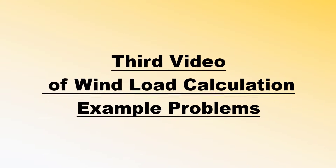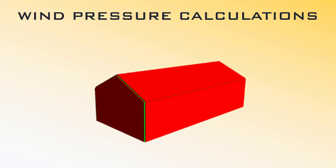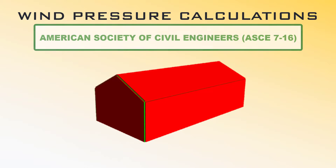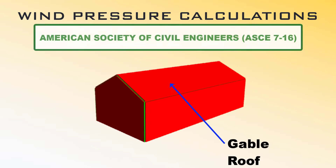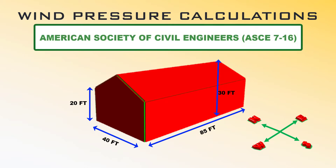Bismillahirrahmanirrahim. Dear friends, this is the third video in the continuation of wind load calculation example problems. In this video we will calculate wind pressures for this structure using ASCE 7-16 specifications. As we can see, this structure has a gable roof. These are the dimensions of the structure and these are the cardinal axes for our reference.